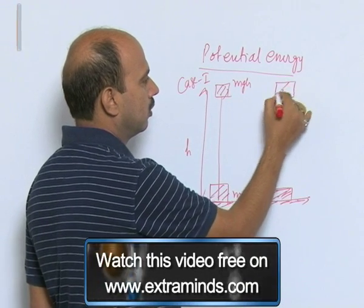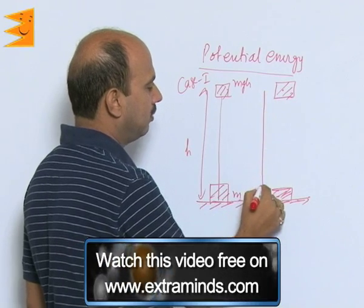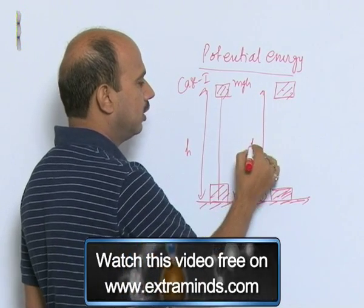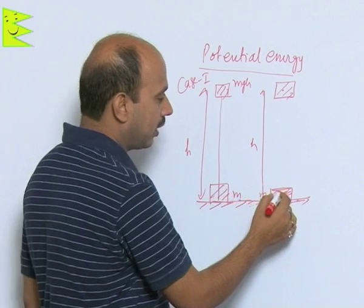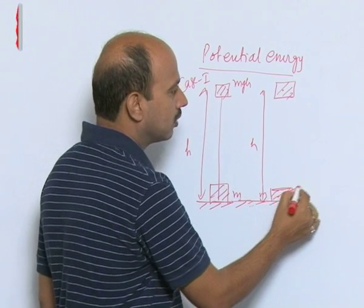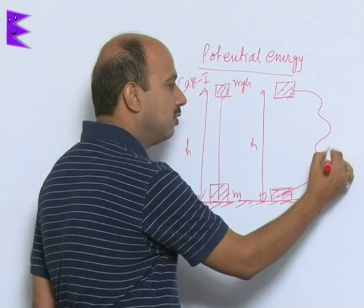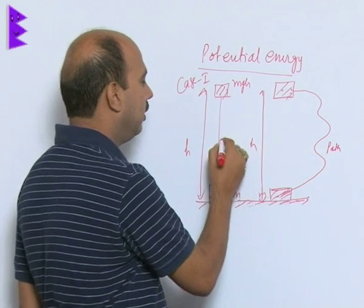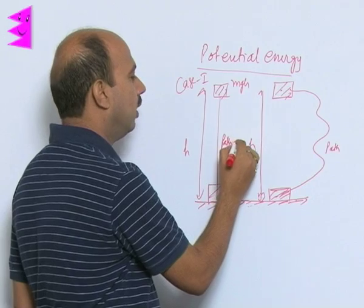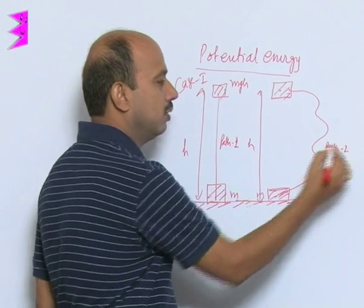Height remains same here h, but this object is taken from this path like this. Path is this here and here the path is this. So, you can say path 1 and this you can say path 2.